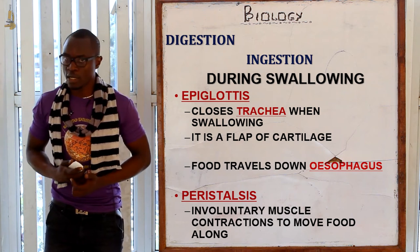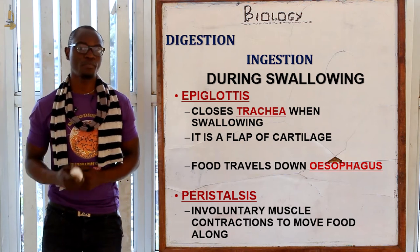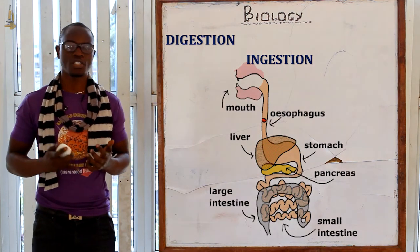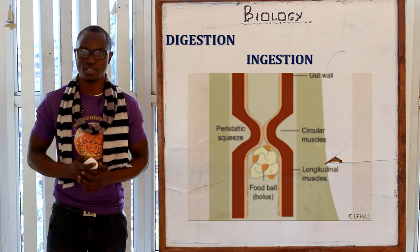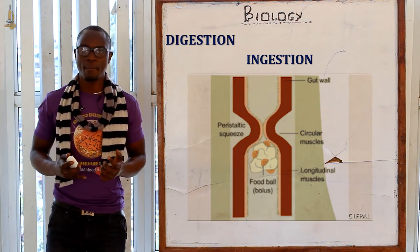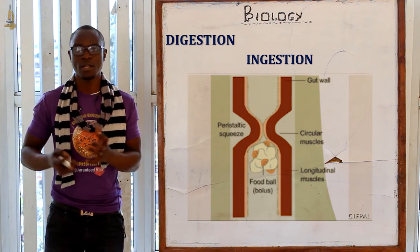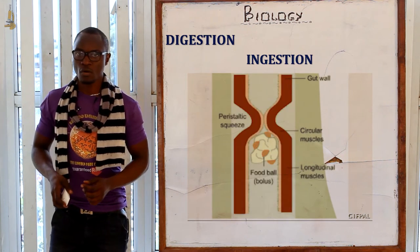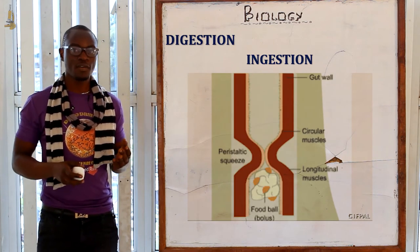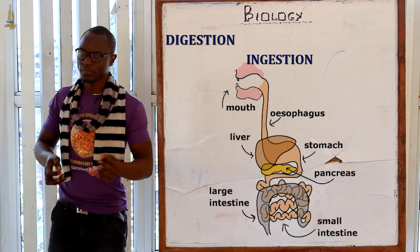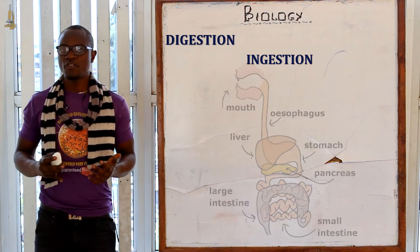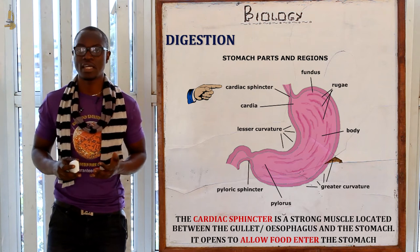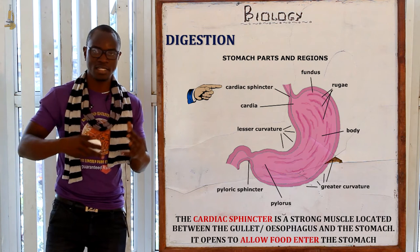The food is then pushed down the oesophagus, or gullet, through a process called peristalsis. Peristalsis involves involuntary muscle contractions that move food down the oesophagus — similar in principle to squeezing a pebble through a straw. Food then travels from the oesophagus into the stomach via a strong muscle called the cardiac sphincter, which relaxes to allow food to enter.